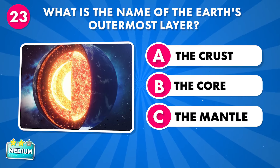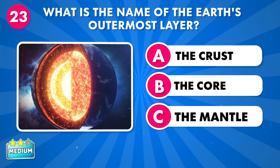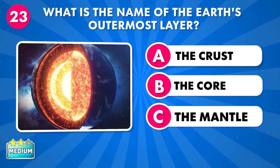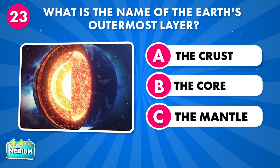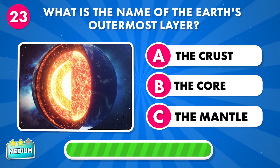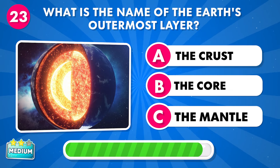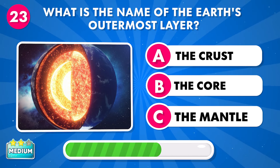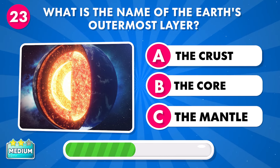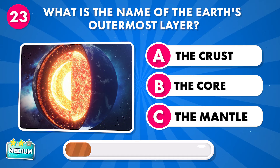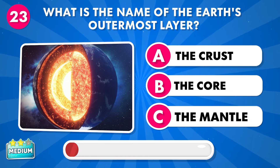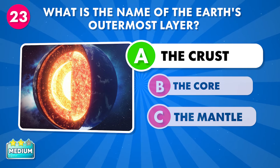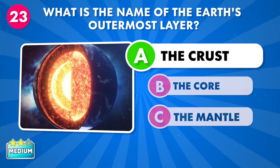What is the name of the Earth's outermost layer? A: the crust, B: the core, C: the mantle. It's the crust.